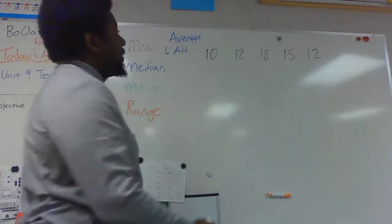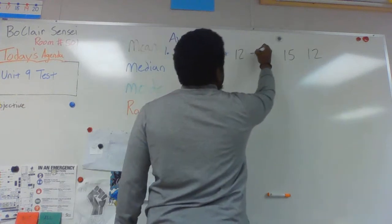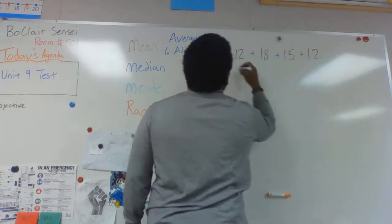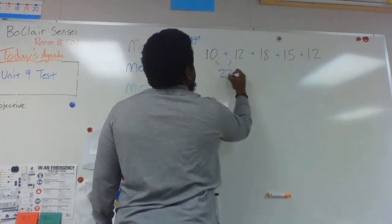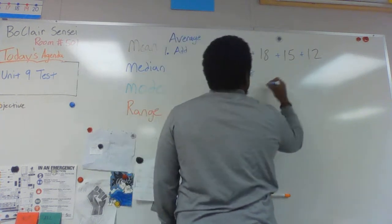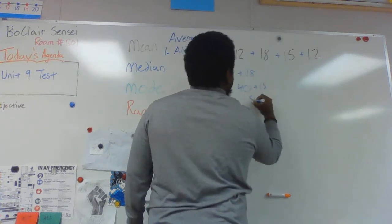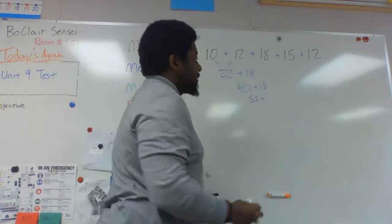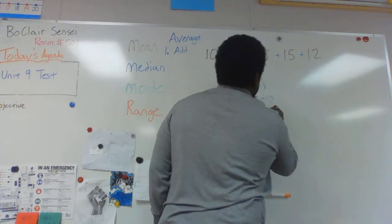So I'm going to go ahead and do that now. I'm going to add all these up. 22, 22 plus 18 is 40, 40 plus 15 is 55, and 55 plus 12 is 67.